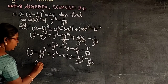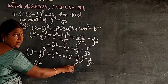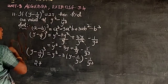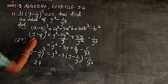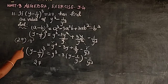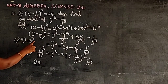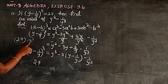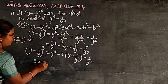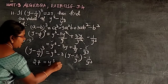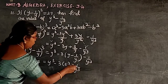Substituting: 27 = y³ - 1/y³ - 3(y - 1/y). Now, 27 = 3³, so (y - 1/y)³ = 3³, which means y - 1/y = 3. Substituting y - 1/y = 3: 27 = y³ - 1/y³ - 3 × 3.